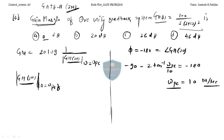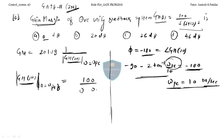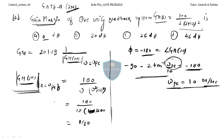Now find the magnitude at ω = 10. The magnitude is 100 divided by ω times (ω² + 100). Substituting ω = 10: 100 divided by 10 times √(100 + 100) — wait, this is (s+10)² so magnitude is 100 divided by 10 times (10² + 10²)^(1/2)... Actually: |G| = 100/(10 × 200) = 1/20. So gain margin = 20 log(20) = 26 dB. The answer is option C.